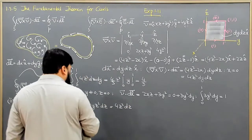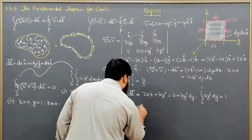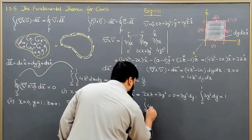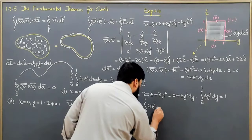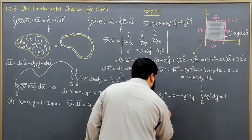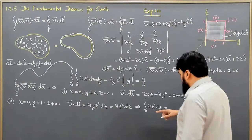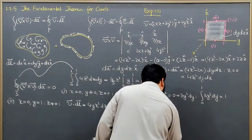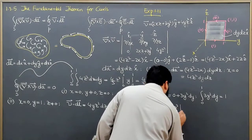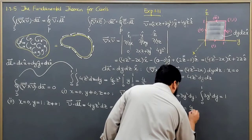Since y equals 1, the integral becomes the integral from 0 to 1 of 4z squared dz, which equals 4z cubed over 3 evaluated from 0 to 1, coming out to be 4/3.